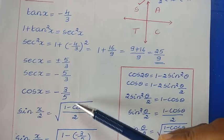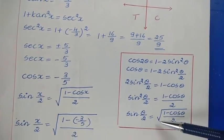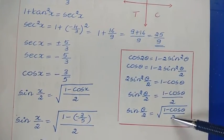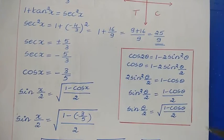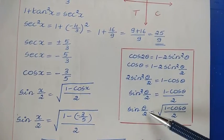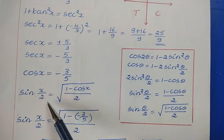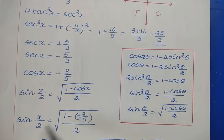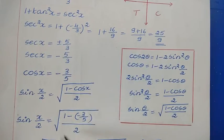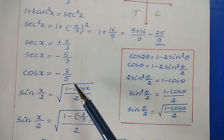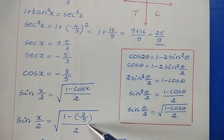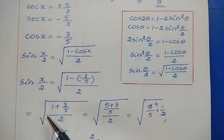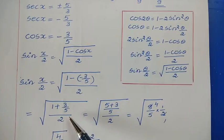Now that we have cos x, we use the formula sin(x/2) = √((1 − cos x)/2). Substituting cos x = −3/5: sin(x/2) = √((1 − (−3/5))/2) = √((1 + 3/5)/2). Taking common denominator 5 gives √((8/5)/2).